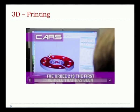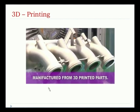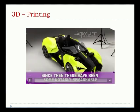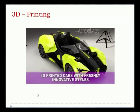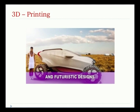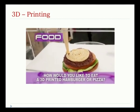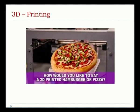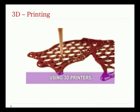Cars: some cars are entirely 3D printed. Some additional assemblies are needed, but some of the structures can be made using 3D printing itself — remarkable 3D printed cars with freshly innovative styles and futuristic designs. Food: in the food industry — why would you like to eat a 3D printed hamburger or pizza? You can go for different shapes and sizes of vegetables, pasta, and meat that melt in the mouth for patients who have trouble chewing.